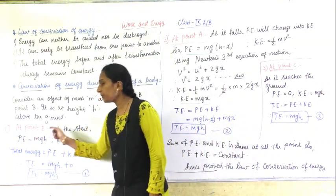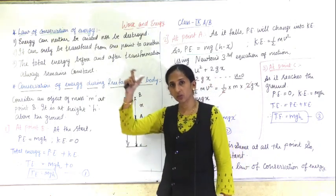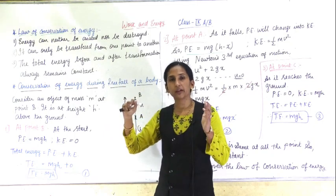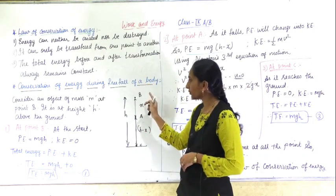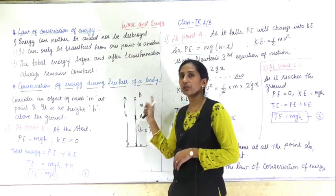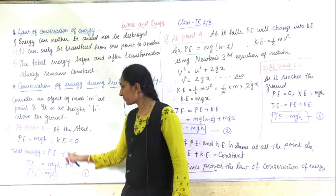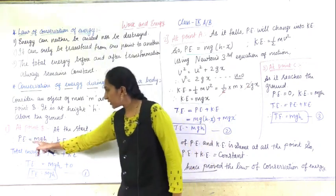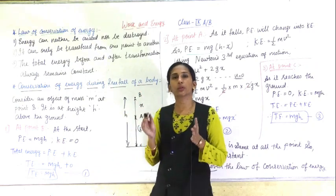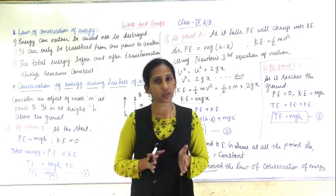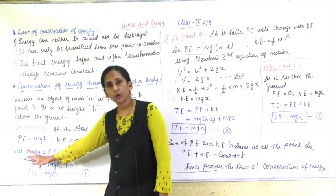First, we study the condition at point B. If any object is above the ground at some height, it has potential energy. The object is at point B, so the potential energy at this point is MGH, and there is no kinetic energy — kinetic energy is zero. At the start, potential energy is MGH and kinetic energy is zero.